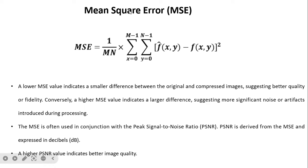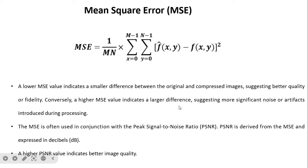Mean square error (MSE) is computed as 1/(MN) times the summation over x from 0 to M-1 and y from 0 to N-1 of the squared difference between the compressed and uncompressed image. A lower MSE value indicates a smaller difference between the original and compressed image, suggesting better quality. Conversely, a higher MSE value indicates a larger difference, suggesting more significant noise or artifacts introduced during processing.